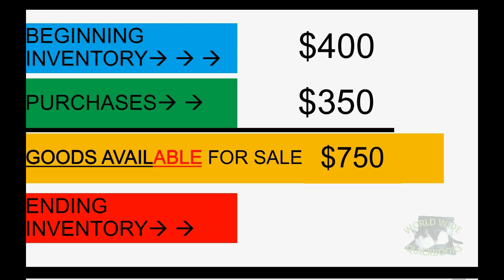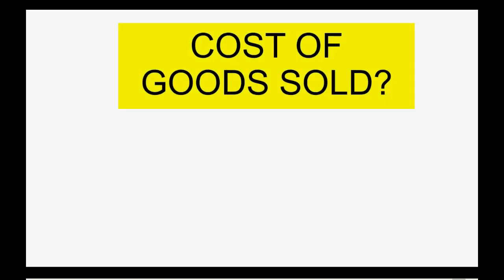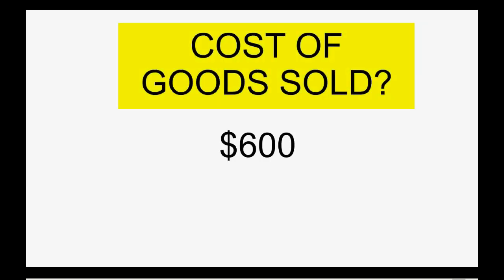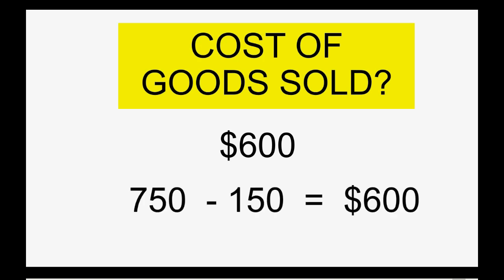Goods available for sale minus your ending inventory equals your cost of goods sold. For example, with $750 of goods available for sale minus $150 in ending inventory that you did not sell, equals $600, which is the cost of goods sold — that's what you paid for the merchandise that went out.